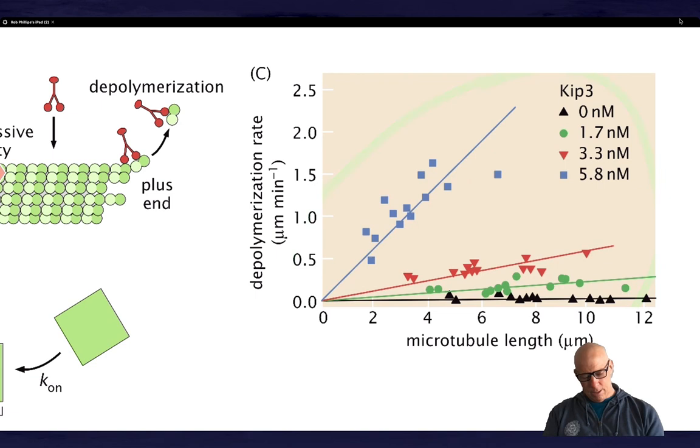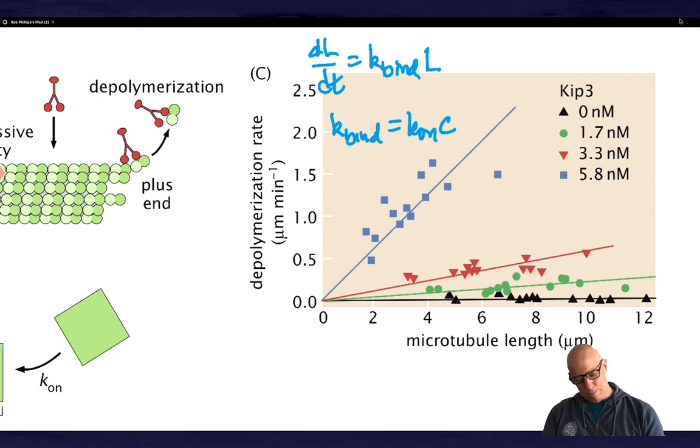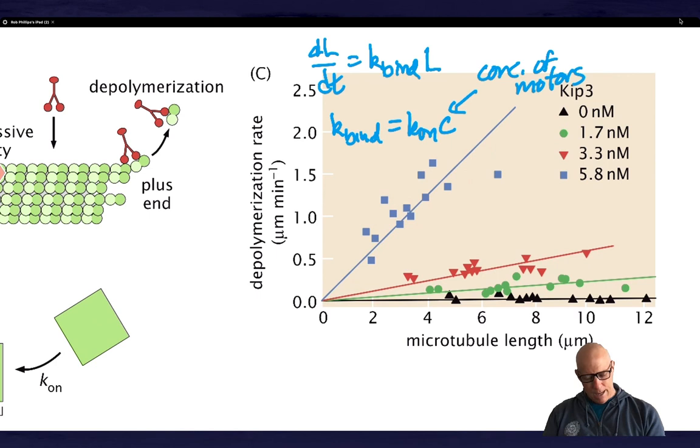And I'm going to say that k_bind is equal to some on rate times the concentration of motors. This is the concentration of motors. And what I'm arguing, so you can see, you know, the higher the concentration of motors, the higher k_bind is. So for example, this curve, or that line is steeper than this one. And that's because the k_bind is higher because of the hidden concentration dependence, the hidden dependence on the concentration of motors.